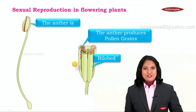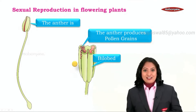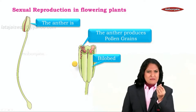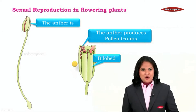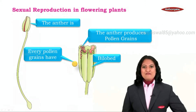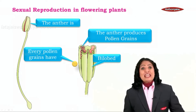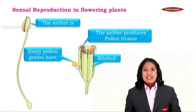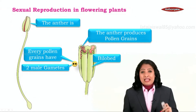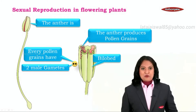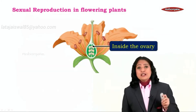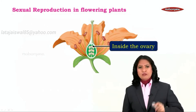These pollen grains are yellow in color. Very often when we touch a flower we see some yellow color particles sticking to our fingers — they are none other than the pollen grains. If we observe pollen grains, eventually every pollen grain will produce two male gametes.